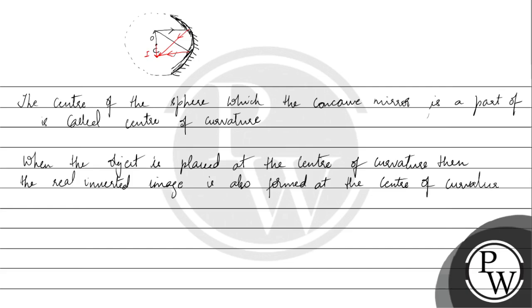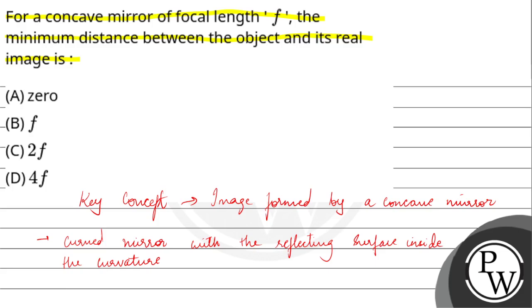Toh is ke hisaab se, the minimum distance — therefore, minimum distance between object O and image I is zero. Toh abhi haam question peh jaake correct option ko mark kar sakte hain. So, for a concave mirror of focal length f, the minimum distance between the object and its real image is zero. The correct option to this question is option A.